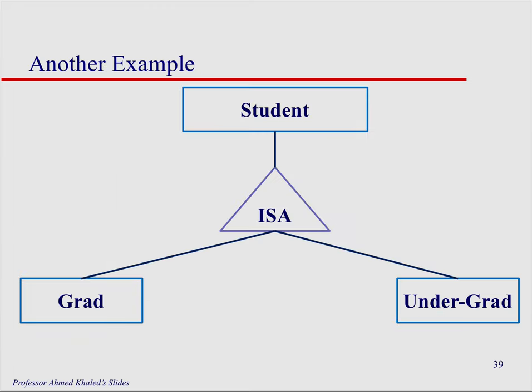Here's another example: a grad student and an undergrad student are both students — they both have things in common, but there may be different things to track. For an undergrad, we might track class level like freshman, sophomore, or junior. For a grad student, there are different specific attributes. But they also share common attributes — they both have student IDs and GPAs.